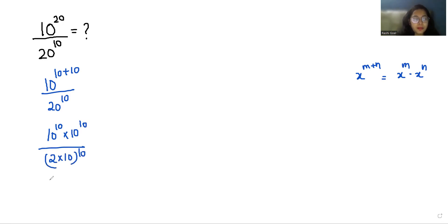Now 10 power 10 times 10 power 10 by another exponent rule, x m power y equals x power y times m power y. So here 2 power 10 times 10 power 10. We can cancel out the 10 power 10 from numerator and denominator.